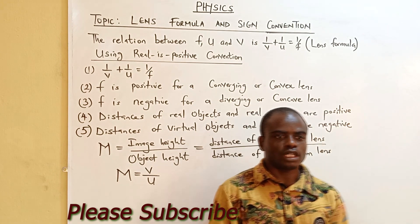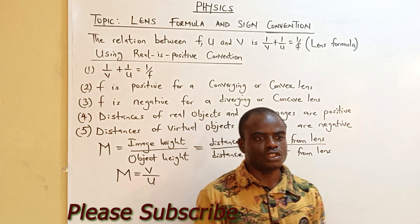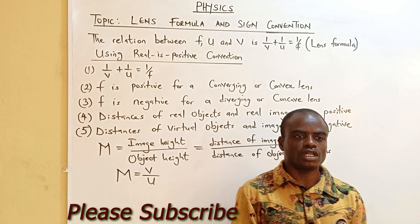The relationship that brings f focal length, image distance v, and object distance u together